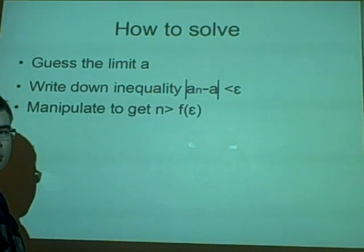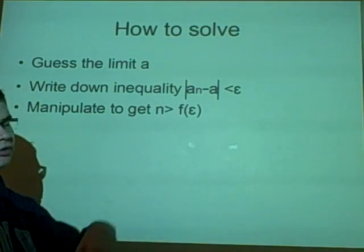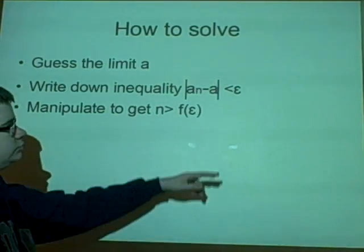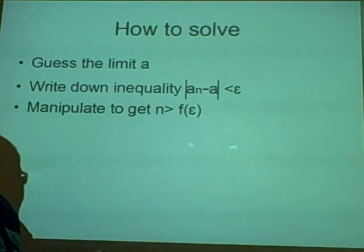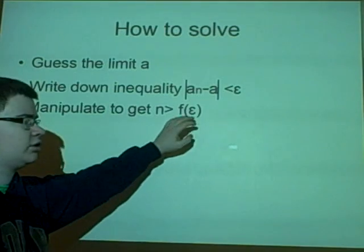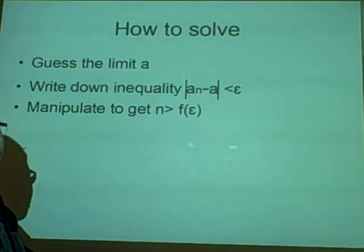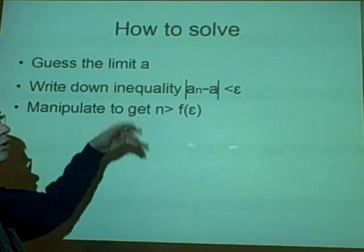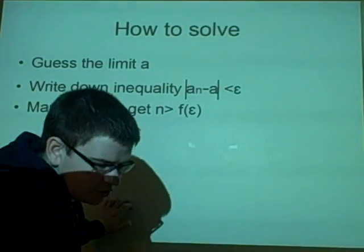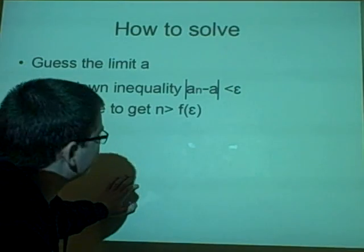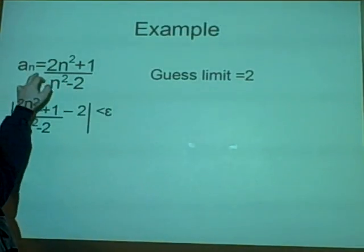Now, how to solve these kinds of questions: first you're given a sequence and you want to guess the limit, which will be a. Then you want to write down the inequality we were given, put our sequence in and the guess we have made, and then manipulate it to get n is greater than some function of epsilon. The only problem I don't like is the 'guessing' — it's not really a guess, it's more like stating the correct answer.